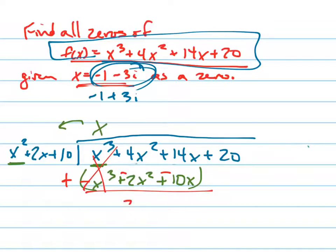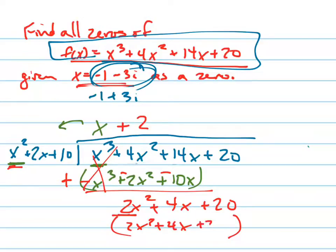Those go away. That becomes 2x squared. That becomes plus 4x plus 20. Divide that by that. You get 2, positive 2. And sure enough, when I multiply it through, I get 2x squared plus 4x plus 20, which I should get.